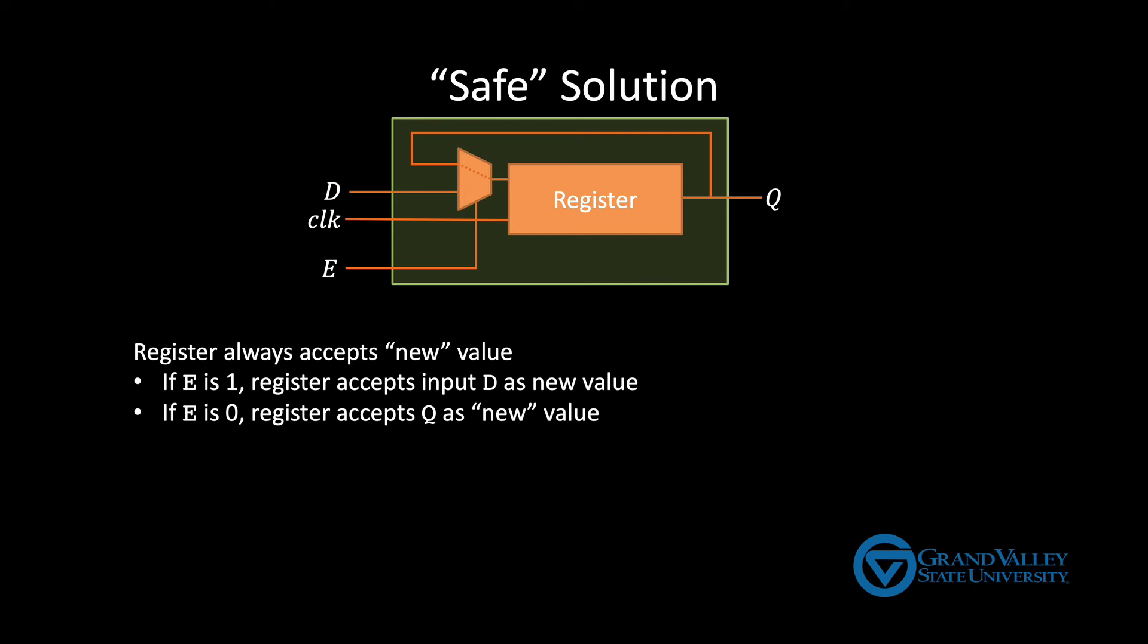Also as a side note, whenever possible, avoid putting logic on the clock. Doing so can lead to several potential complications. We just saw one. Another common one is called clock skew, where the propagation delay of the gates on the clock lead to different components of the CPU seeing the clock signal at different times.